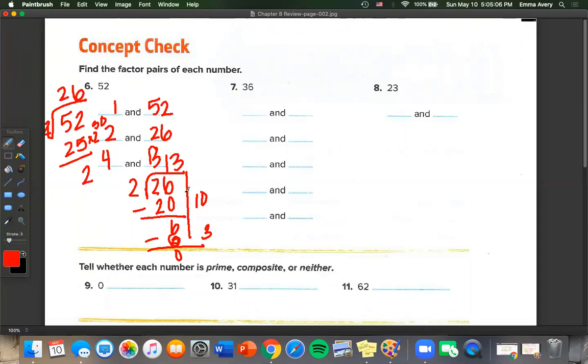Now, let's do 36. So 1 times 36. It's an even number, so we can do 2. So half of 36 is 18. 3 plus 6 equals 9. 9 divided by 3 is 3, so it's divisible by 3. So it's 3 times 12. And then 18 can still be divided, so 4 and 9 is another factor. And then 6 and 6, because that's one of our squares.